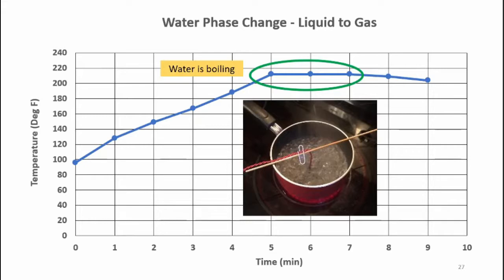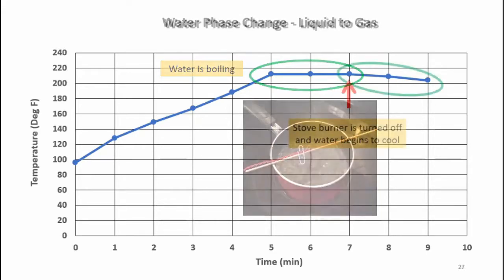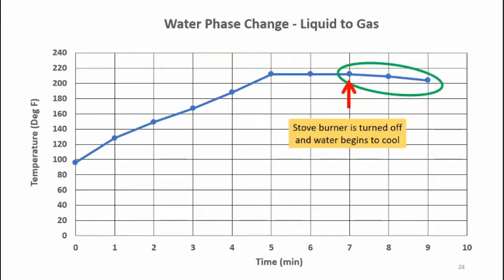This means if I'm making a cup of tea, it will never get hotter than 212 degrees Fahrenheit. After I turn the burner off, the water began to cool, as you can see here on the data plot.